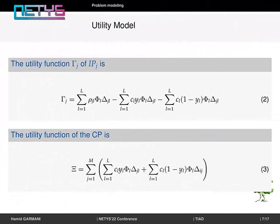Utility model. The utility function sigma_g of infrastructure provider g is the difference between the obtained payoff and the costs.